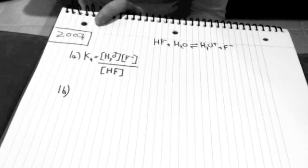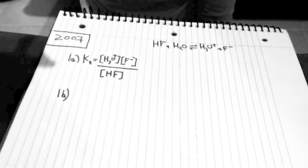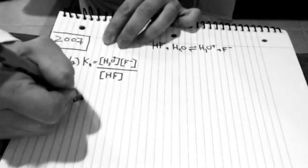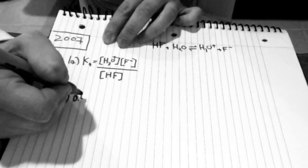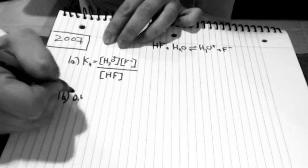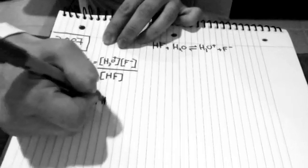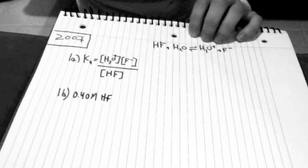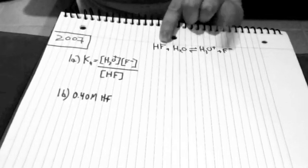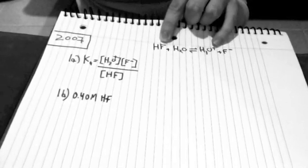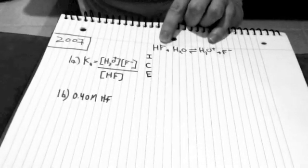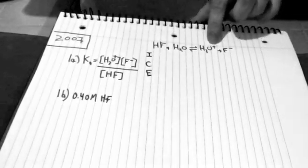Now for 1B — and remember question number one is always something about equilibrium. For 1B, they're asking you to calculate the molar concentration of hydronium in a 0.40 molarity hydrofluoric acid solution. Because this is a weak acid, I know that the hydrofluoric acid is not going to fully dissociate. It's not going to fully turn into H₃O⁺, so I'm going to have to set up an ICE table and use some algebra.